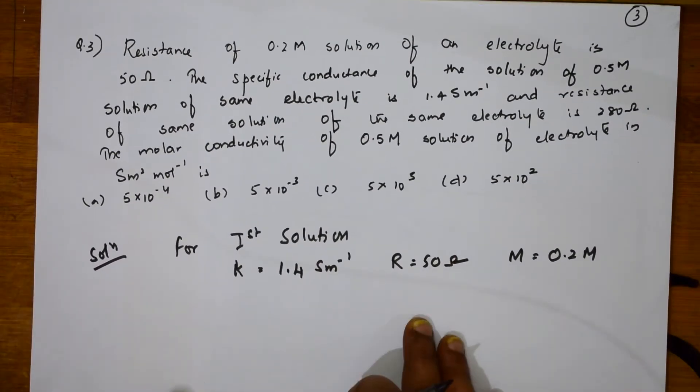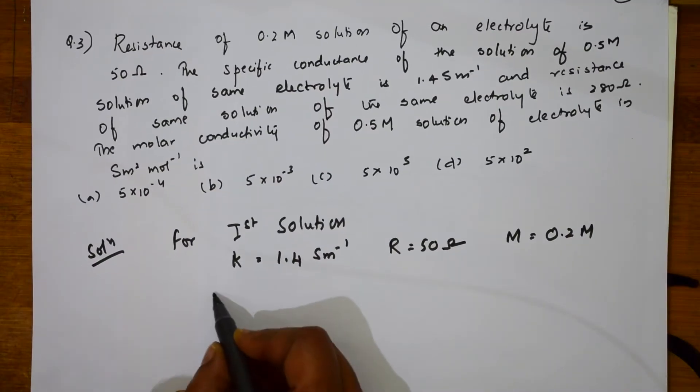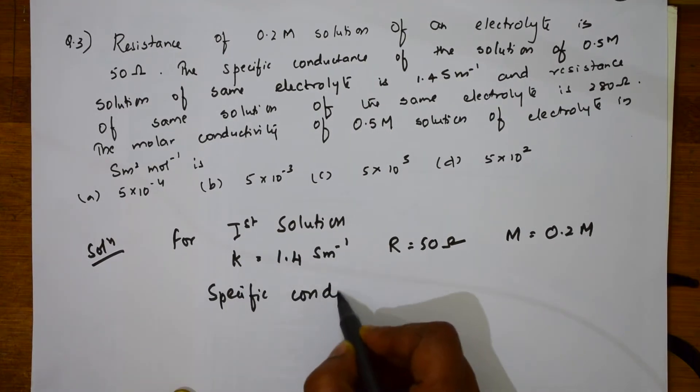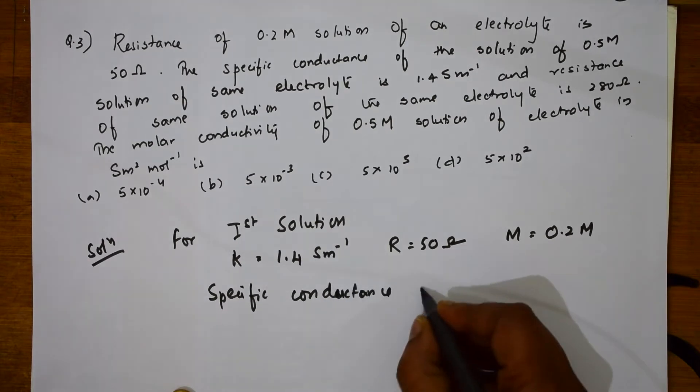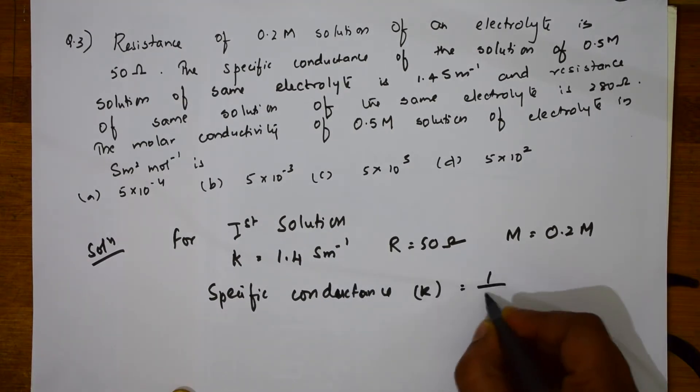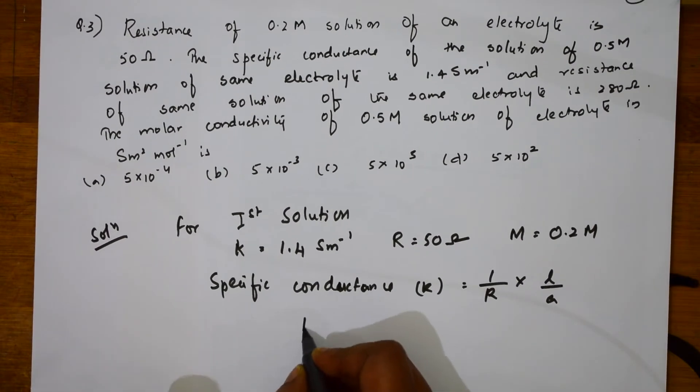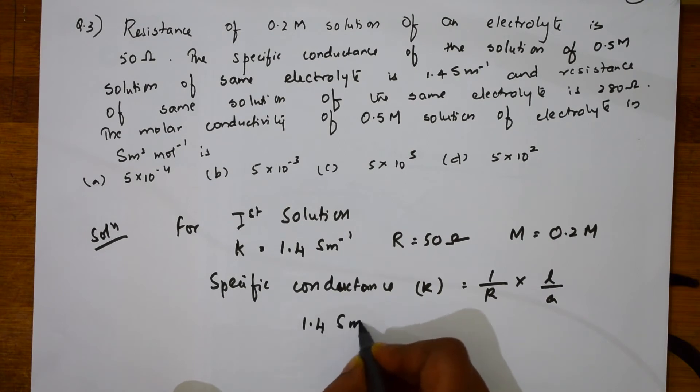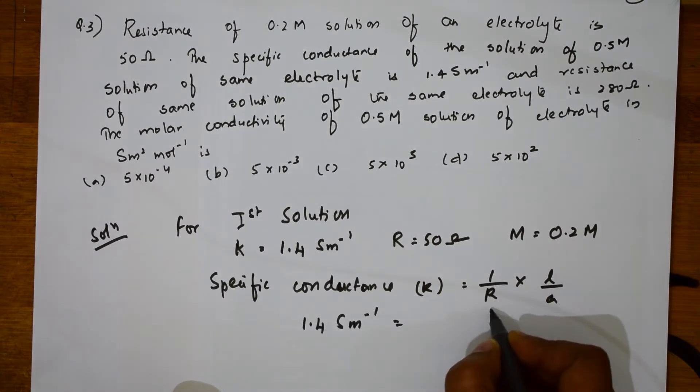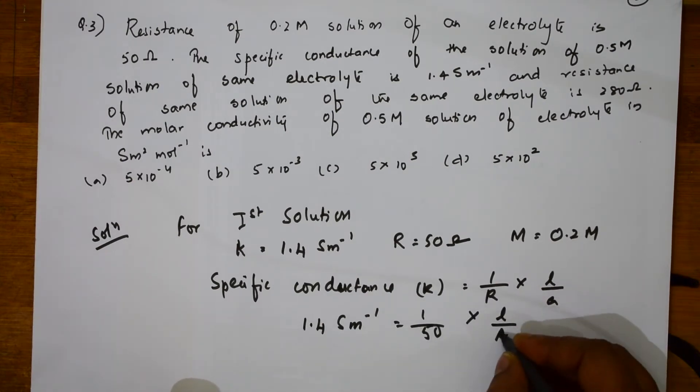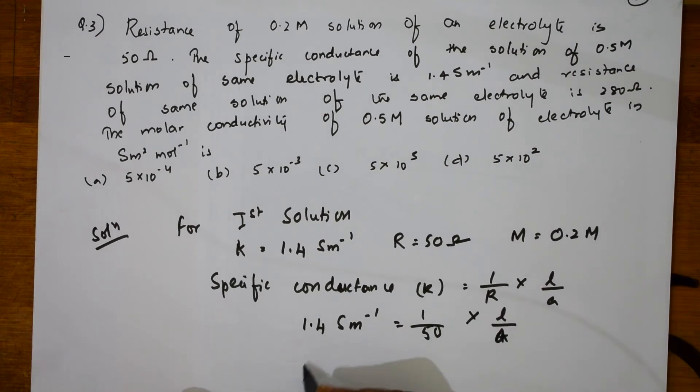So, for the first solution, if I have to find, first I will take specific conductance according to the formula which I have to substitute. Specific conductance, kappa is equal to 1 by R into L by A. What is K value? 1.4 S/m is equal to 1 by R, that is 1 by 50 into L by A. Because I don't know L by A, it's a cell constant. Take that L by A outside.